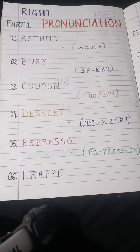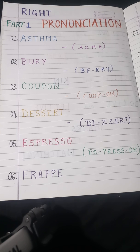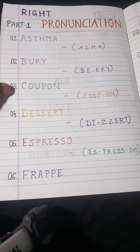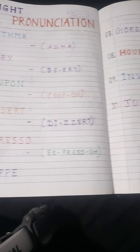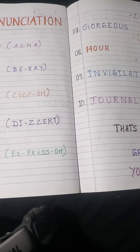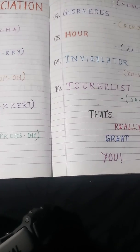Moving on to our sixth one. The word starts with the letter F: F-R-A-P-P-E. It is generally mispronounced as 'Frappee' — but the right pronunciation is 'Frappay'.